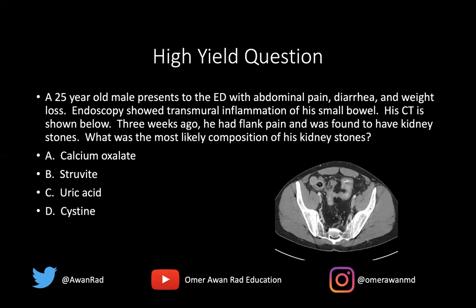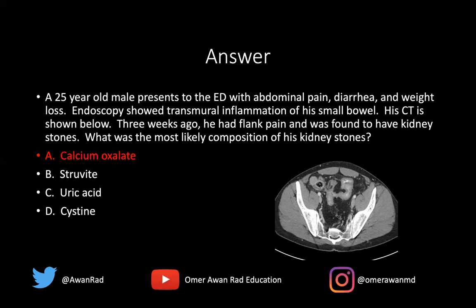Returning to our opening question: a 25-year-old with abdominal pain, diarrhea, and weight loss, with transmural inflammation of the small bowel on endoscopy and CT showing terminal ileum wall thickening and stricture — this is Crohn's disease. With kidney stones three weeks ago, the most likely composition is calcium oxalate. In Crohn's disease, malabsorption of calcium predisposes patients to calcium oxalate kidney stones, and they are also predisposed to cholesterol gallstones. Thank you for your attention — tune in next week for another high-yield USMLE vignette.